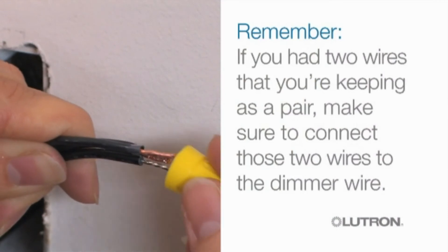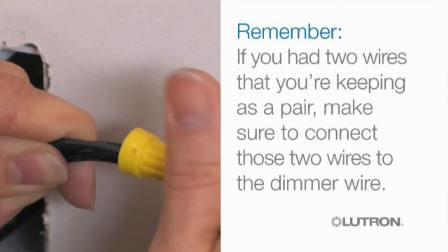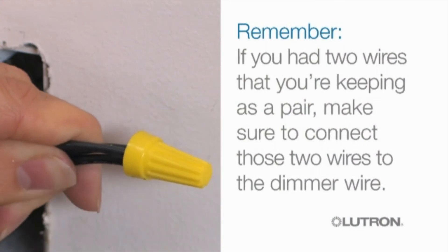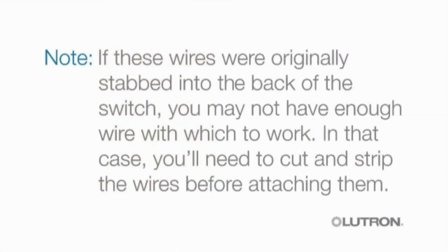Remember, if you had two wires that you're keeping as a pair, make sure to connect those two wires to the dimmer wire. If these wires were originally stabbed into the back of the switch, you may not have enough wire to work with. In that case, you'll need to cut and strip the wires before attaching them.